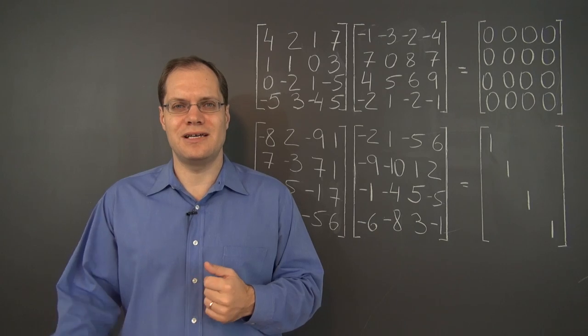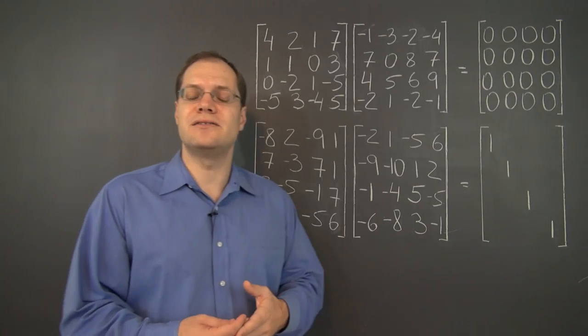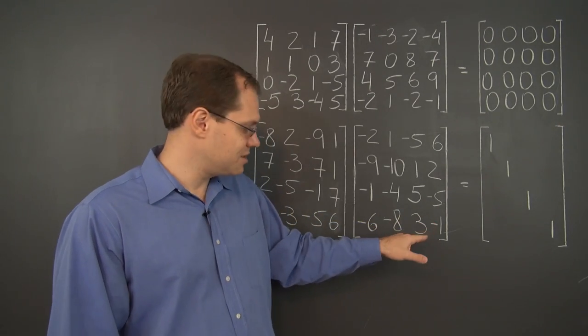In the course of Gaussian elimination, you would be dealing with a lot of fractions. But by the end, all the fractions will go away, and you'll be left with a clean matrix, this one.